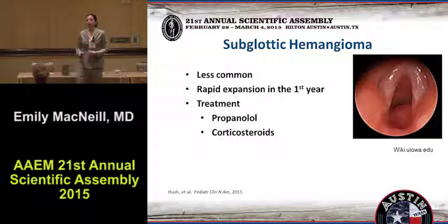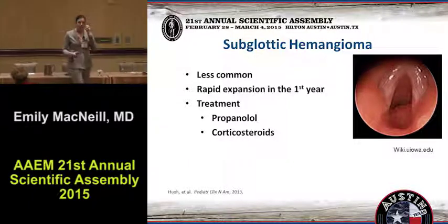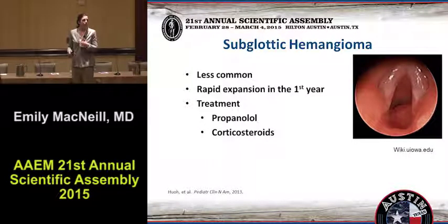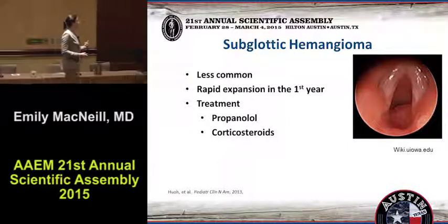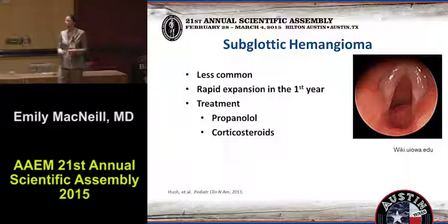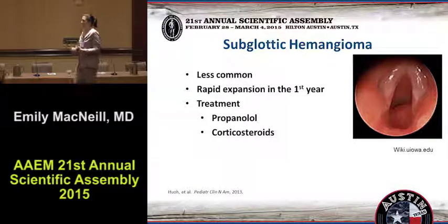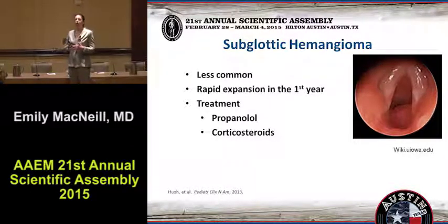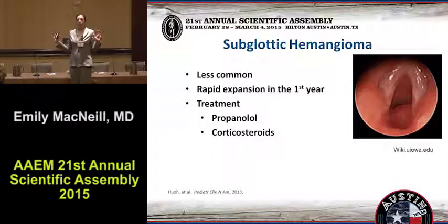Subglottic hemangioma is another one you don't want to mess with. All the pretty little kids who get the hemangioma that grows over the first year of life — well, you can get them under your vocal cords as well. They're called subglottic hemangiomas. Just like real hemangiomas, they expand rapidly in the first year of life. They're usually treated with propranolol and corticosteroids. Again, not an airway you would ever want to get involved with in the emergency department. Recurrent or progressive longer-term biphasic stridor — I wouldn't be crazy about intervening.